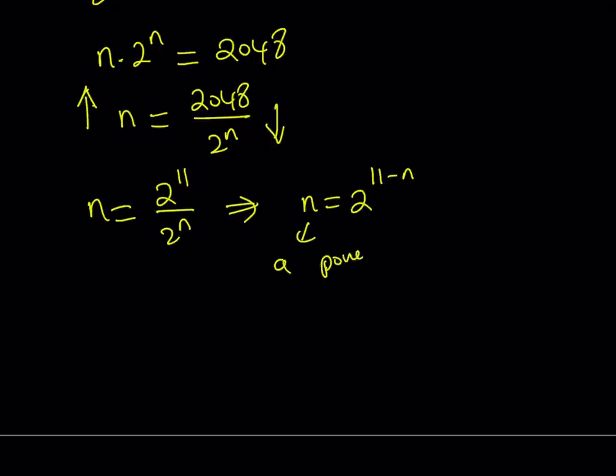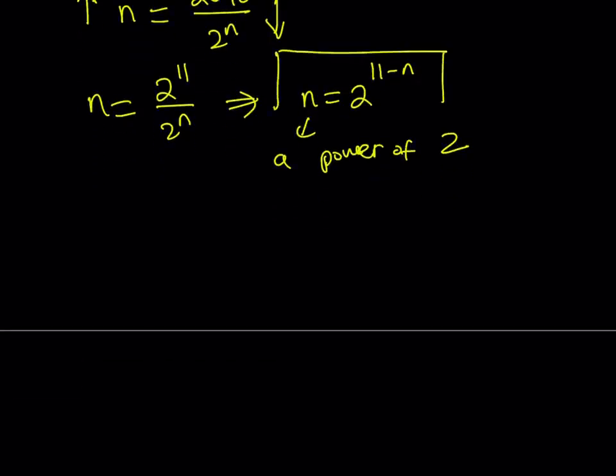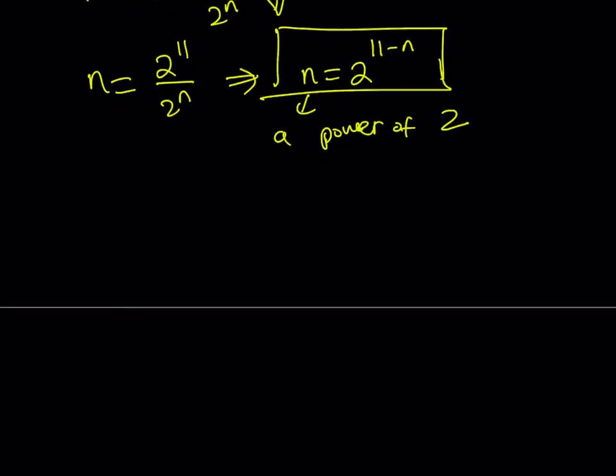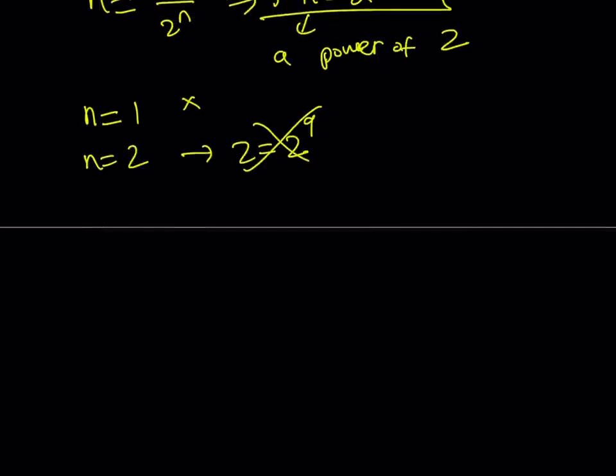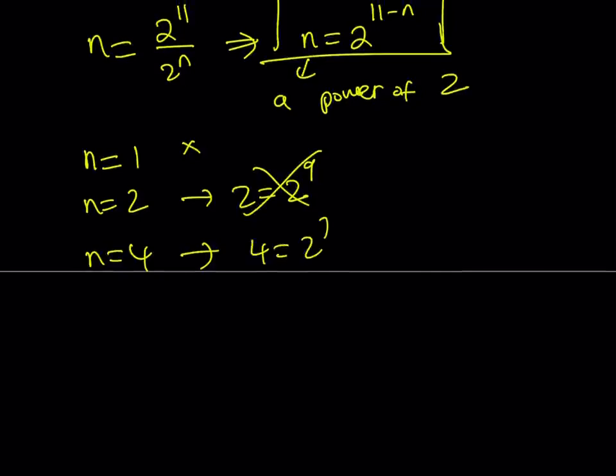And if x, well, I should probably say, yeah, n is a power of 2. Exactly. So if n is a power of 2, then I can just guess and check. I know some people don't like that, but there's probably better approaches. But I'm just going to plug in powers of 2 for n. Obviously n equals 1 is not going to work. n equals 2 is going to give me 2 equals 2 to the power of 11 minus 2, which is 9. Obviously, that's wrong. And n equals 4, which is a power of 2, is going to give me 4 equals 2 to the power of 7. And again, that's not right. But if you plug in n equals 8, you notice you get 8 equals 2 to the power of 11 minus 8, which is 3. And this is absolutely correct. Therefore, n equals 8 is a solution.